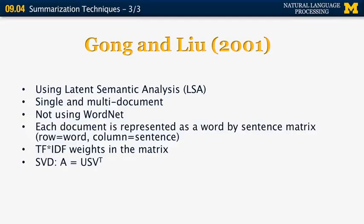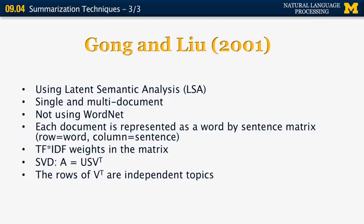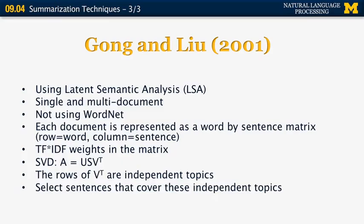So LSA, as we remember from a previous lecture, is based on singular value decomposition. So we want to represent the matrix A as the product of U, sigma, and V transpose, where the rows of V transpose are independent topics that correspond to the documents. And then we want to pick the sentences that contain the independent topics. So that's, in summary, how the Gong and Liu method works. So we're going to continue with evaluation of summarization in the next segment.